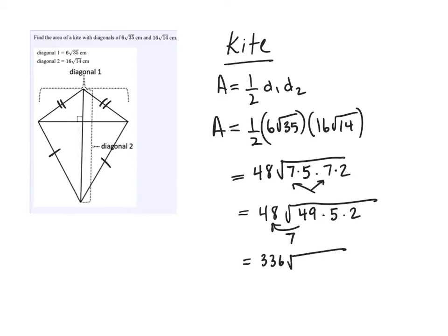Left underneath the root is still the 5 and the 2, and 5 times 2 is 10. So our final answer is 336 root 10.